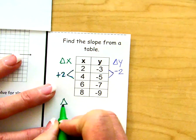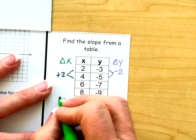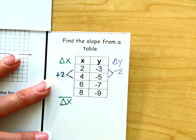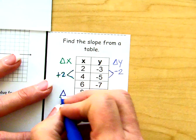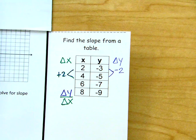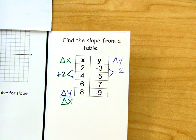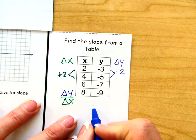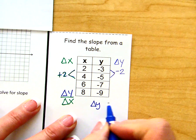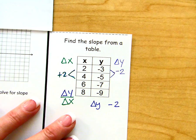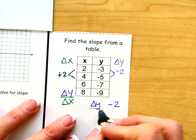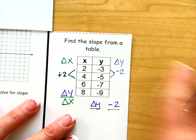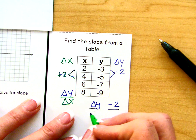So slope, as we have seen before, is the change in y over the change in x. So what you have there is a change in y of negative 2 and a change in x of positive 2.